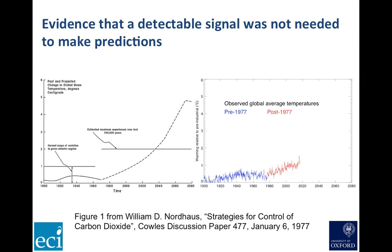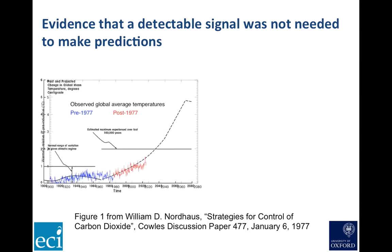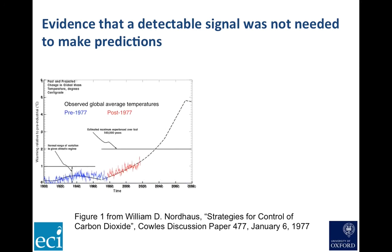If we plot observed temperatures right up to the present day — that little spike at the end is 2016 — on exactly the same scale, we see that his prediction was remarkably accurate, confirming it was not necessary, and nor, as the Charney report concluded, necessarily wise, to wait until the warming was detectable before predicting what was going to happen next.